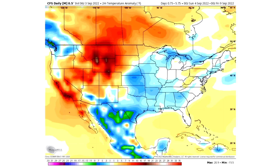In today's video, we're going to be taking one massive look at the month of September in the model guidance — basically what it's suggesting as far as temperatures, storminess, snowiness for some of the mountainous regions, and also where troughs and ridges are going to set up. This is going to be an action-packed video, so stay tuned.